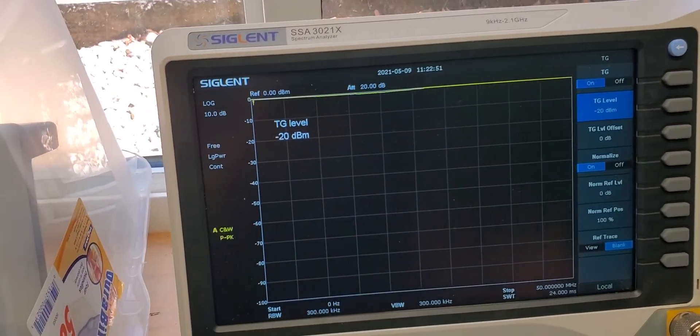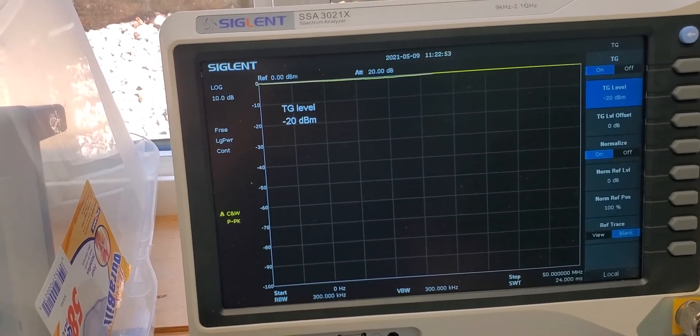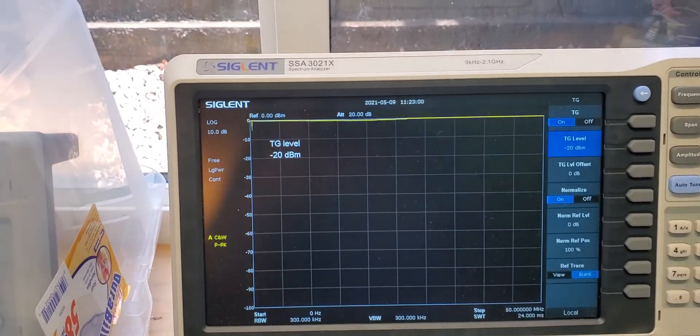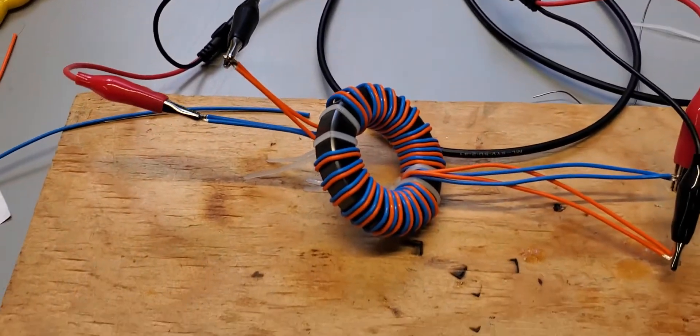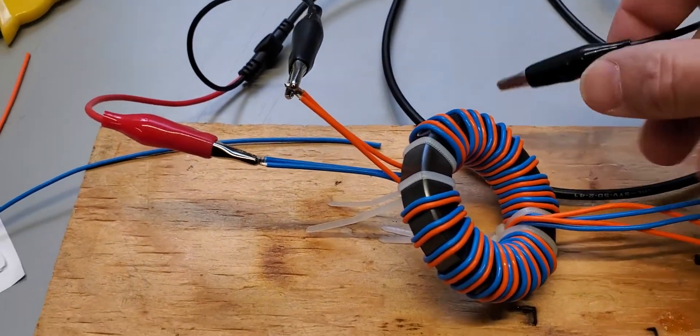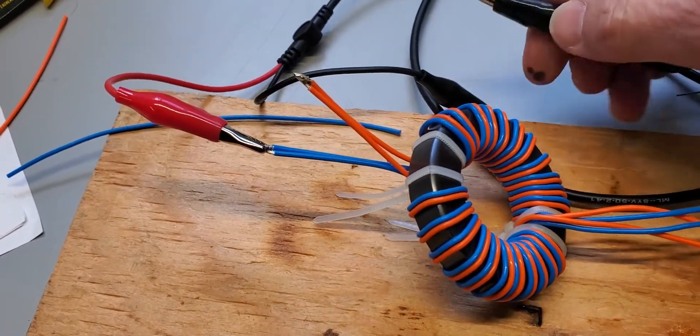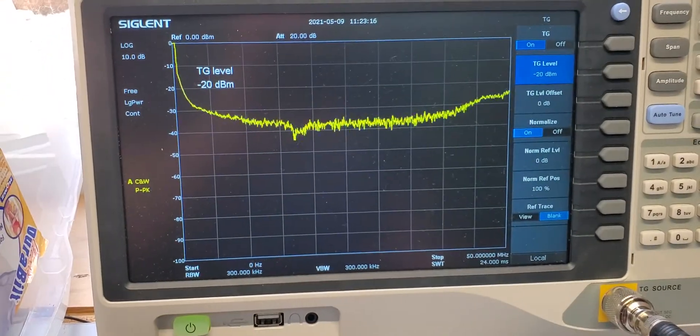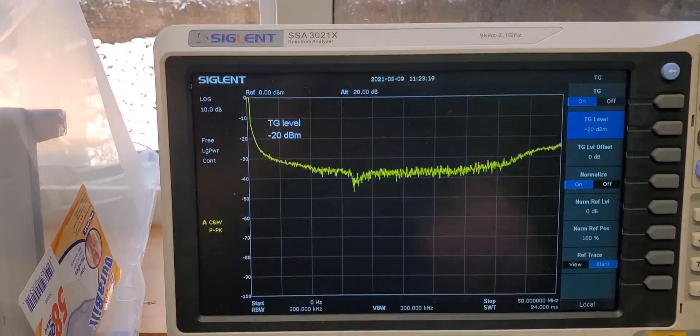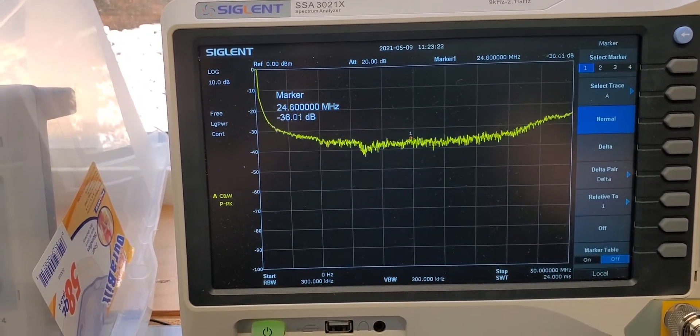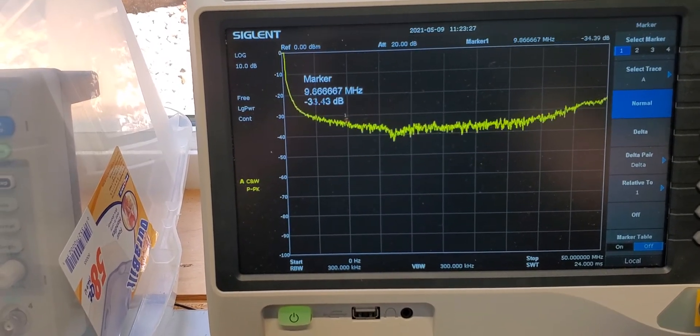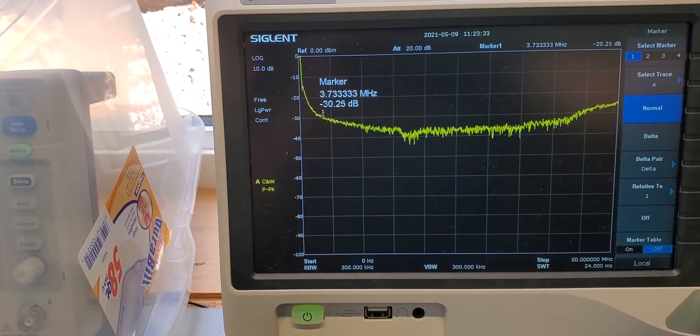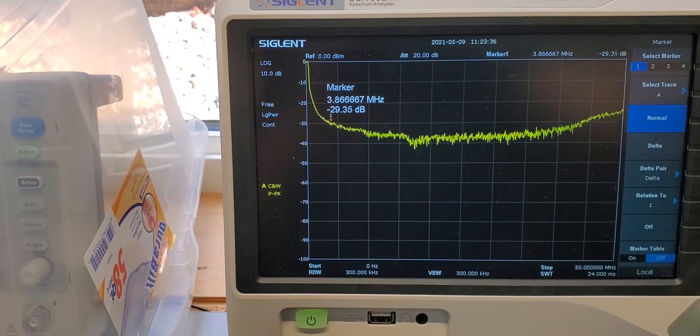I think we can zoom in a little bit on that later to see what's going on. Let's go ahead and simulate the common mode, so we put the grounds together. Now we see the attenuation, so it definitely drops down here nicely. Let's get the marker out so we can see where we are.